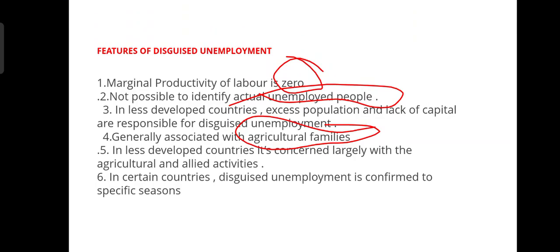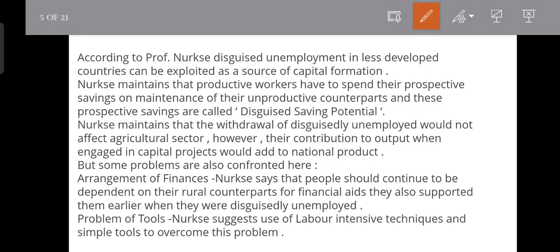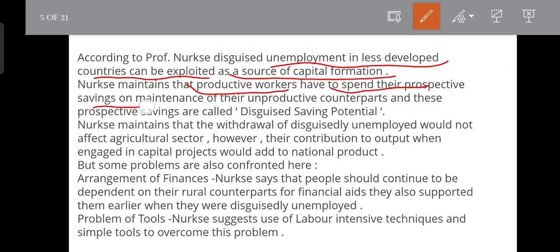If they are not having a job, then they will have disguised unemployment — as simple as that. Now we will go to the theory of disguised unemployment. Unemployment in less developed countries can be exploited as a source of capital formation. Nurkse maintains that productive workers have to spend their prospective savings on the maintenance of their unproductive counterparts.